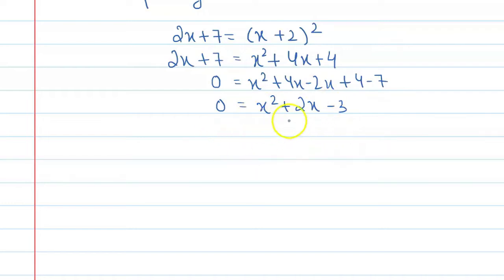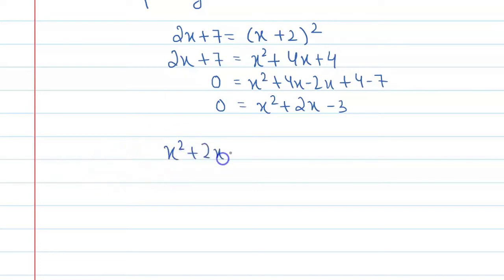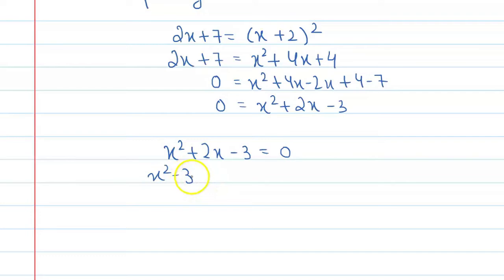Let's factorize this equation by splitting the middle term and we will get the answer. It is x square plus 2x minus 3 equal to 0, and this will be x square plus 3x minus x minus 3 equal to 0.